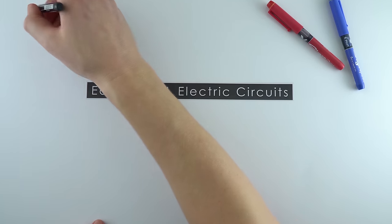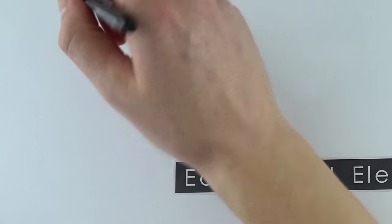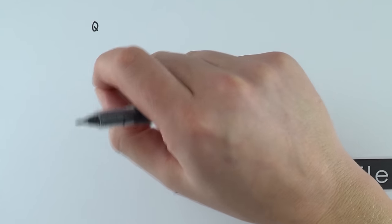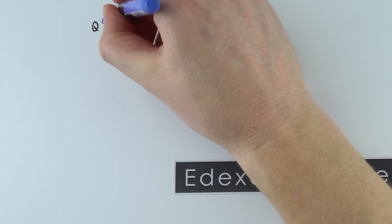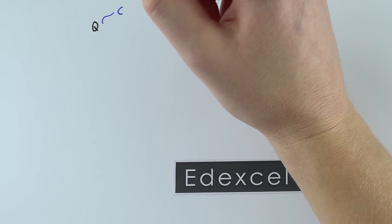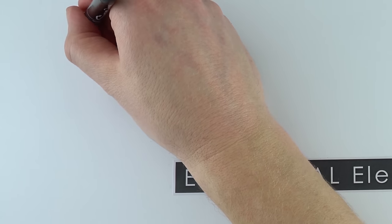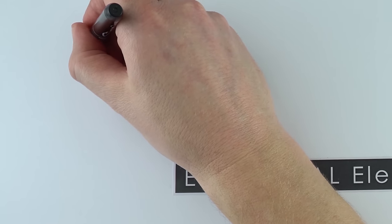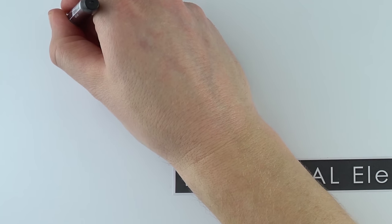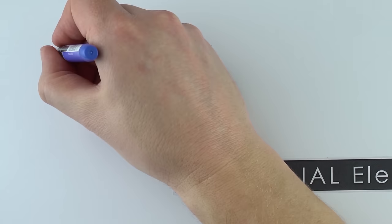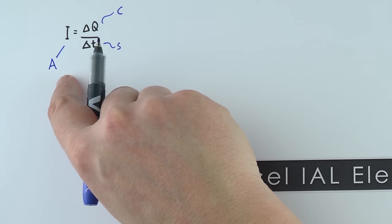The first thing we're going to start with is the letter Q. Q stands for the charge on an object, and small objects — for example electrons — all have a charge. We measure charge in the unit of coulombs, which is a capital C. If we look at how much charge goes past a point, we can look at the change in charge divided by the change in time, and this is what we call an electric current. Time is measured in seconds and the current is measured in amperes or amps.